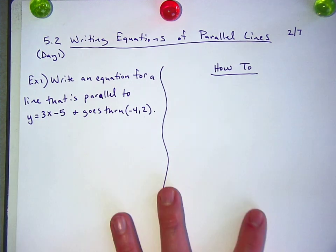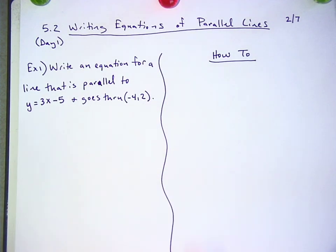Okay, so we need to write the equation of a line that is parallel to y equals 3x minus 5 and goes through the point negative 4, 2.